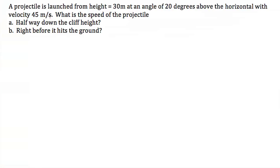Here we have a physics problem that reads: a projectile is launched from a height of 30 meters at an angle of 20 degrees above the horizontal, with a velocity of 45 meters per second. What is the speed of the projectile halfway down the cliff height, and then right before it hits the ground?